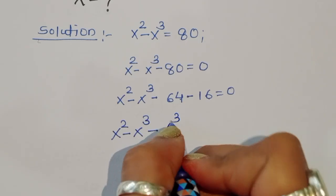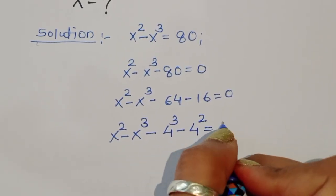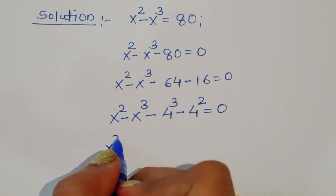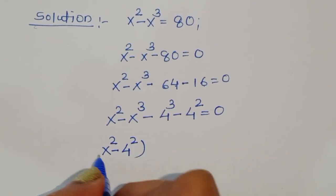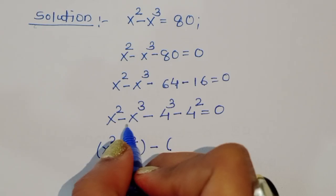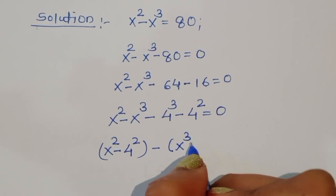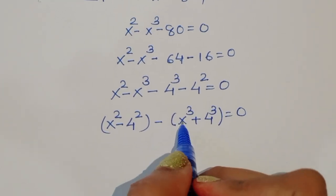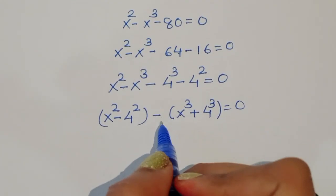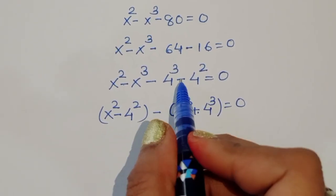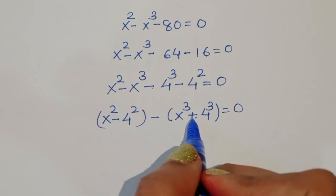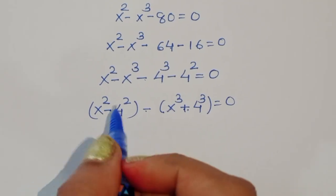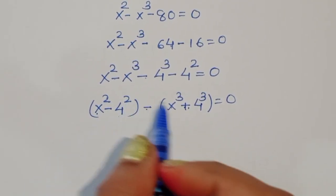Now we regroup: x squared minus 4 squared minus x cubed plus 4 cubed equals 0. The plus sign here is because we have minus x cubed; taking the minus outside gives minus times minus 4 cubed, which is plus 4 cubed. So we have two groupings: (x squared minus 4 squared) and minus (x cubed minus 4 cubed).